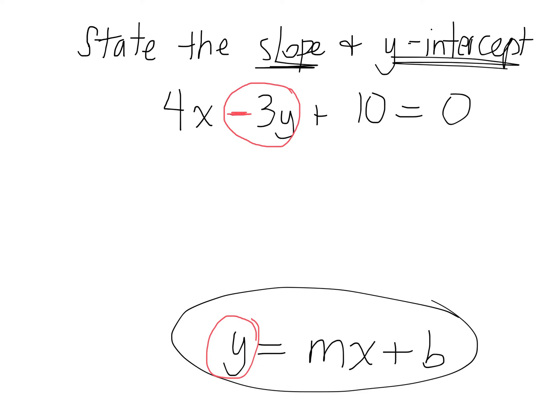I want to get rid of everything from the left side except for this negative 3y. So I'm going to keep negative 3y on the left side. How do I get rid of 4x? Subtract 4x. And how do I get rid of plus 10? Subtract 10.